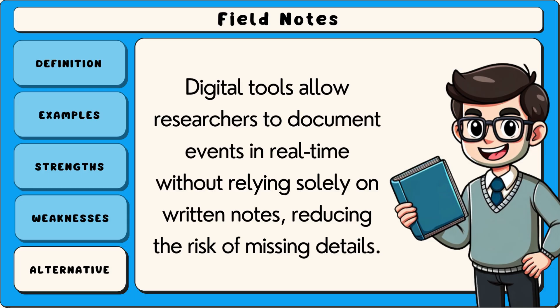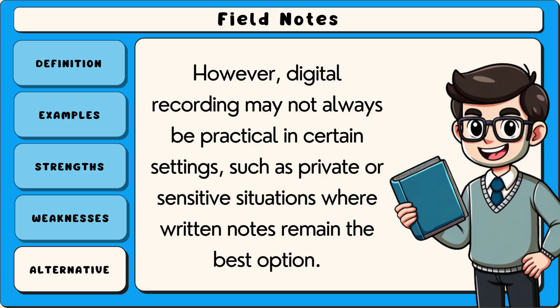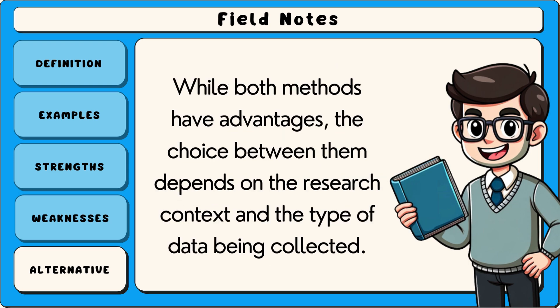Digital recording reduces the risk of missing details and provides an objective record that can be reviewed multiple times for accuracy. However, it may not always be practical in certain settings, such as private or sensitive situations, where written notes remain the best option. The choice between methods depends on the research context and the type of data being collected.